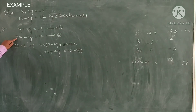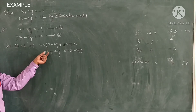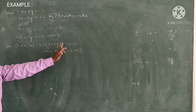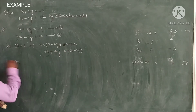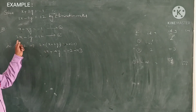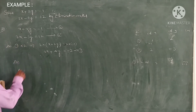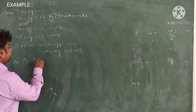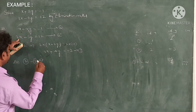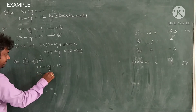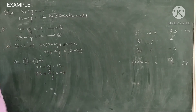Students, observe here. In equation 2, the coefficient of x is 2. In equation 3, the coefficient of x is also 2. So equation 3 is nothing but equation 1 multiplied by 2 on both sides. Now, for eliminating one variable — which variable can be eliminated? We can eliminate x, because both x coefficients are equal to 2. Equation 2 is 2x minus 3y equals 12, and equation 3 is 2x plus 4y equals minus 2.